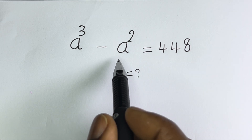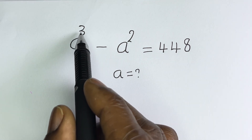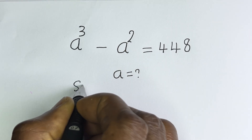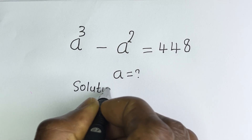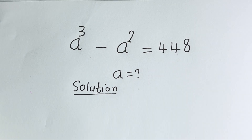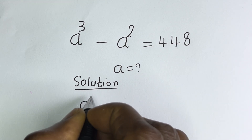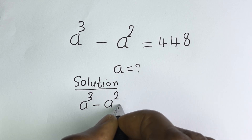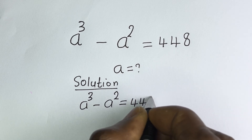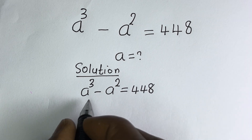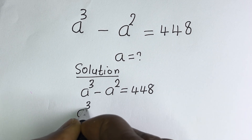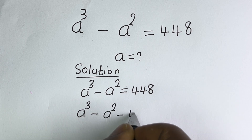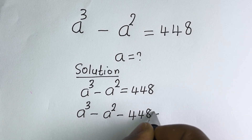Hello. How to solve for A in this equation: A raised to power 3 minus A squared is equal to 448. We have A raised to power 3 minus A squared is equal to 448, which is the same as A raised to power 3 minus A squared minus 448 is equal to 0.